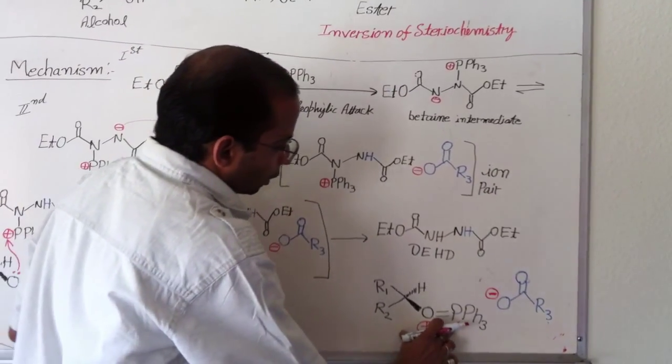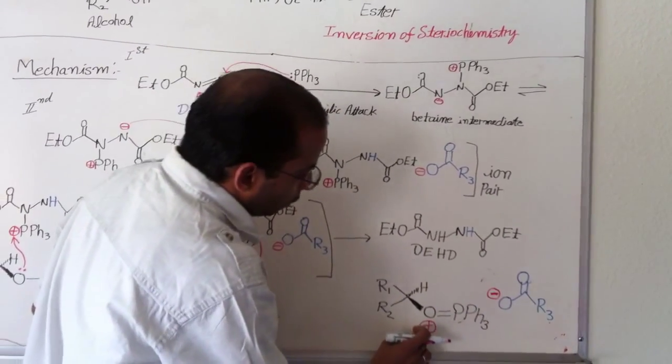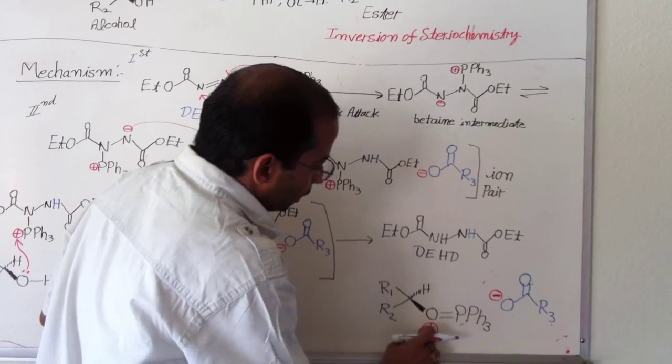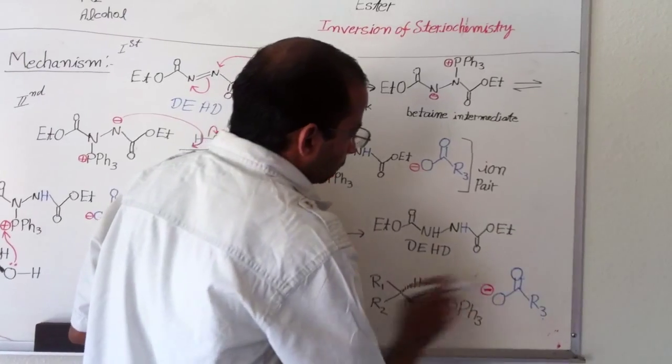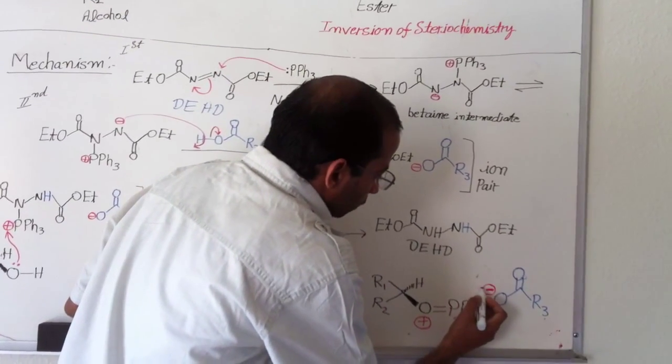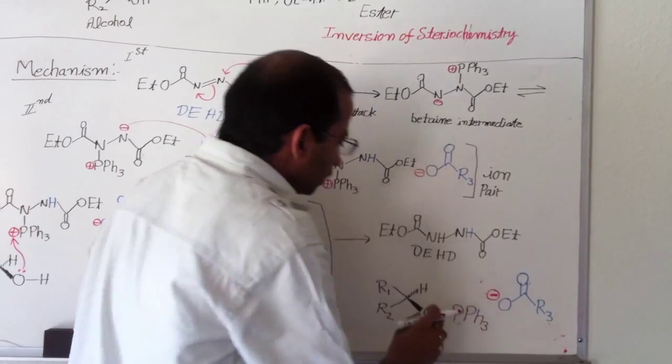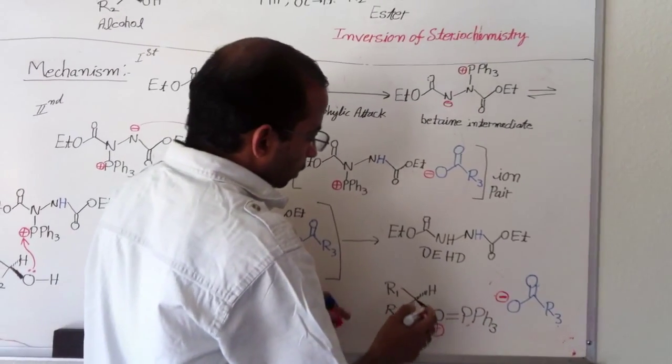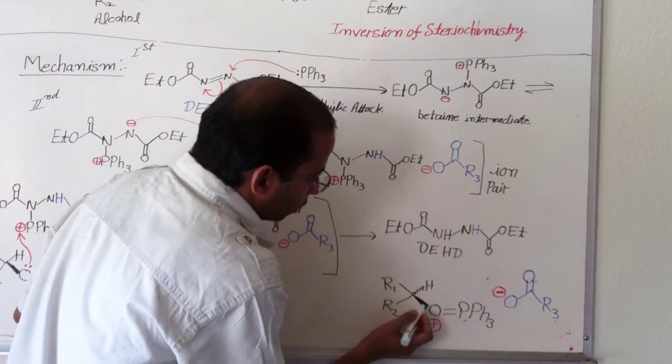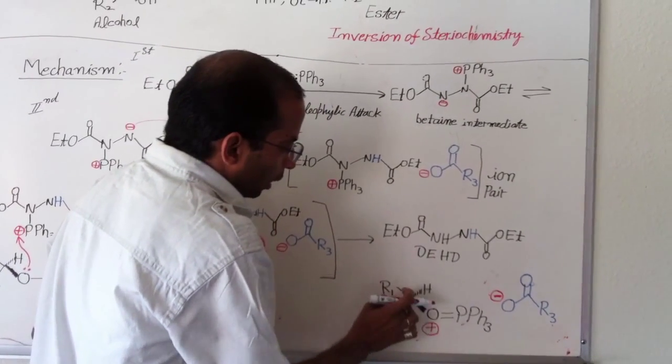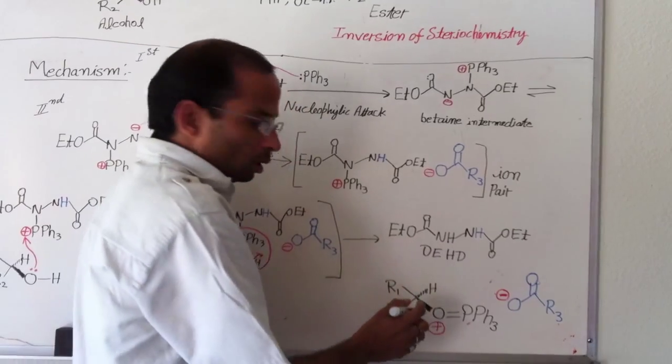Once again, phosphine oxide with alkylphosphine oxide and carboxylate. And at the end, this phosphine, now you can see here, this is the main point where the stereochemistry turns. Because right now, this bond is above the plane. And hydrogen is below the plane.